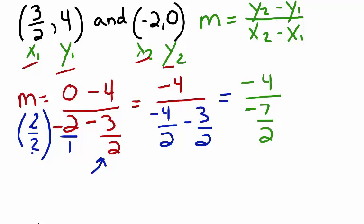In order to simplify it, I'm going to rewrite my integer negative 4 as negative 4 over 1 divided by negative 7 over 2. Now I have a problem that's set up as the division of two fractions.